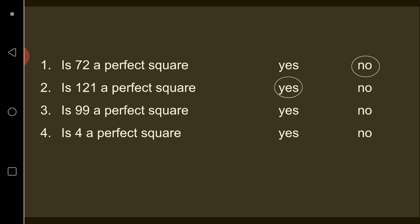Okay, the answer for number three was no because no integer times that same integer would give you 99. And number four is yes because 2 times 2 would give you 4, making 4 a perfect square.